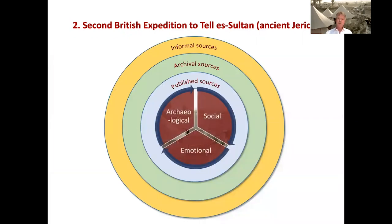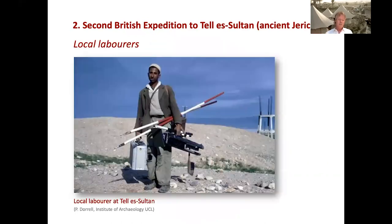Thanks to the combination of the published sources, unpublished archival records, and informal documentation, the three dimensions of the expedition to Tala Sultan can be visualized. For reasons of time, I will just give one example of how fruitful the combination of several kinds of sources and dimensions can be for the study of the history of archaeology. I will focus on a subject which, until recently, has hardly been paid attention to: the local workmen. By combining the three dimensions based on as many published sources, unpublished archival records, and informal documentation as possible, we are able to get a balanced view of this group of participants that was crucial for the expedition's progress.